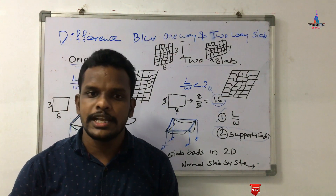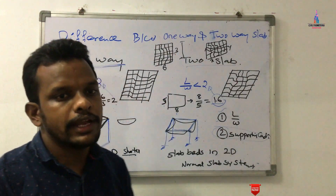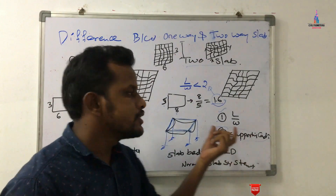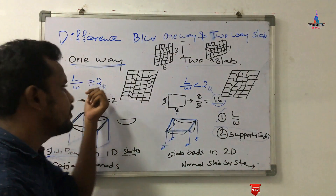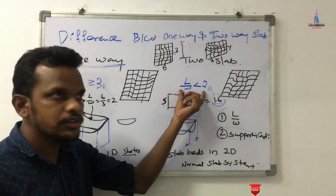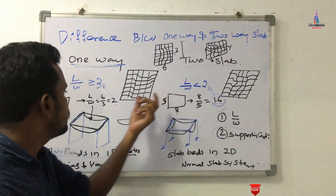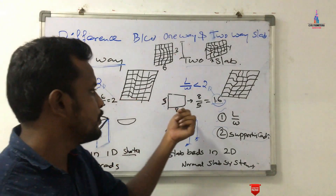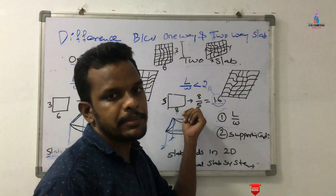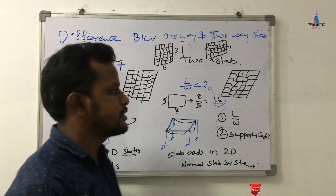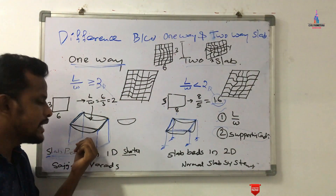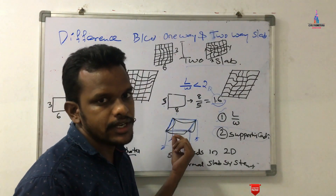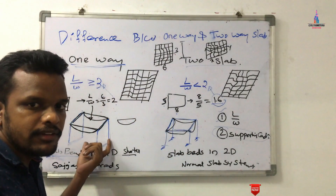To summarize, the slab system depends on two factors: the length-by-width ratio and the supporting member condition. For one-way slab, L/W is greater than or equal to 2; for two-way slab, L/W is less than 2. A 6×3 meter slab is one-way; an 8×5 meter slab is two-way. Bending in one-way is towards the shorter span, while in two-way it acts in all directions but with less intensity due to four support conditions.